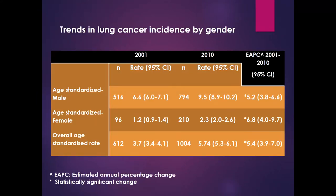From 2001 to 2010, the age-standardized rate in males increased from 6.6 to 9.5, representing a 5.2% increase per year. In females, the rate increased from 1.2 to 2.3 over the 10 years. Notably, the annual percentage increase in females is higher than in males, which is quite intriguing.